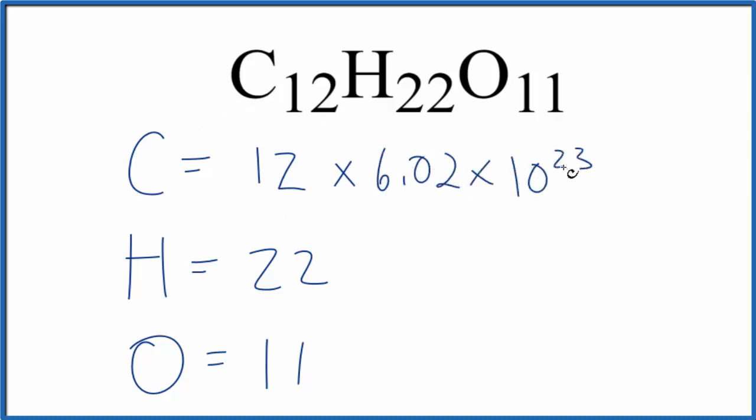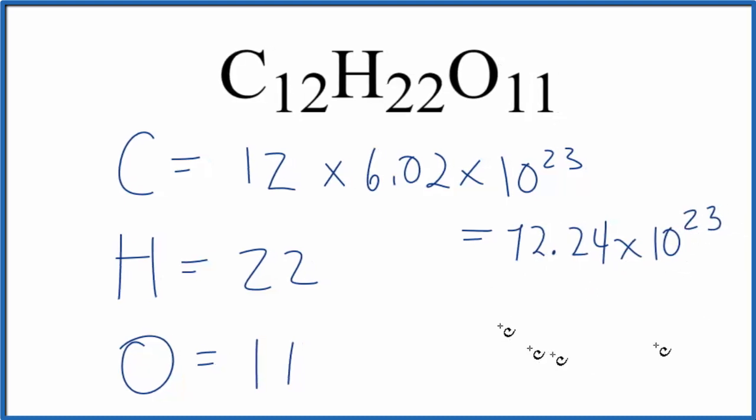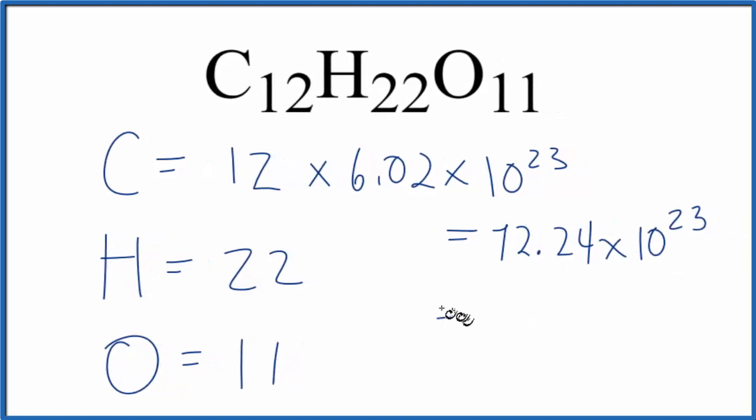When you do that, you end up with 72.24 times 10 to the 23rd. Sometimes teachers like to have this in scientific notation, we have 7.224 times 10 to the 24th.